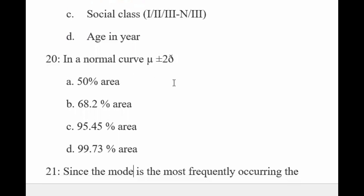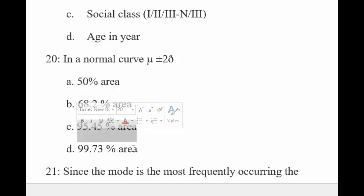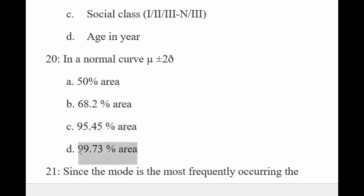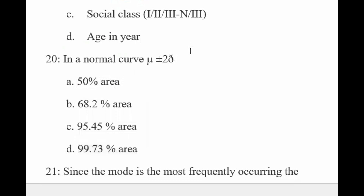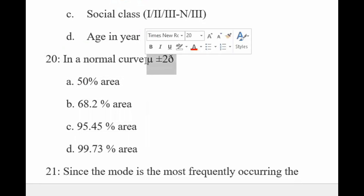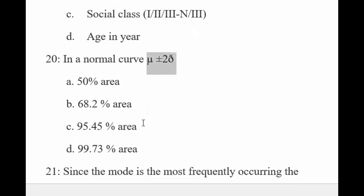Normal curve: mean plus minus two standard deviations. Ek standard deviation mein hamare paas 68% data aata hai, 2 standard deviations mein 95.45% aata hai, aur 3 standard deviations mein 99.73% data aata hai. Toh yahan mean ke plus aur minus dono side pe 2 standard deviations hain, toh 95.45% data aata hai.